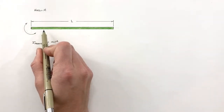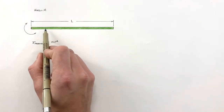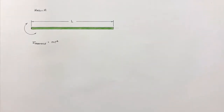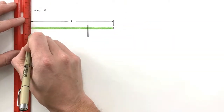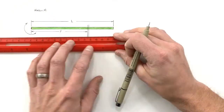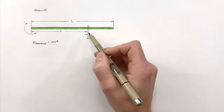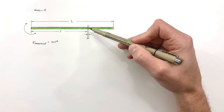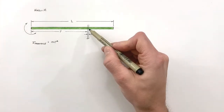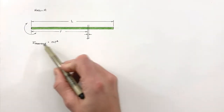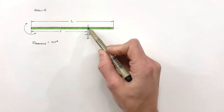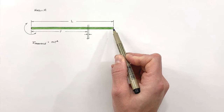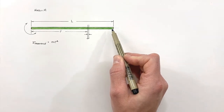So rather than looking at the entire rod as one big particle all at one radius, we're going to break this rod up into an infinite number of very tiny slices. We'll treat each slice as though it is a single particle, and if we can find the inertia of just one slice, we'll be able to add up the inertia of all the slices along this rod and come up with the total inertia of the entire rod.